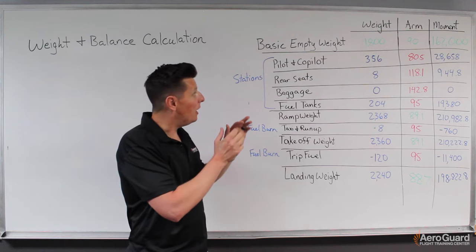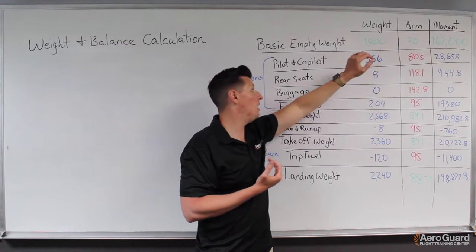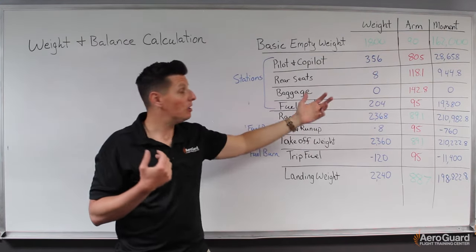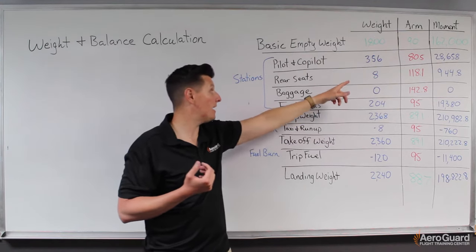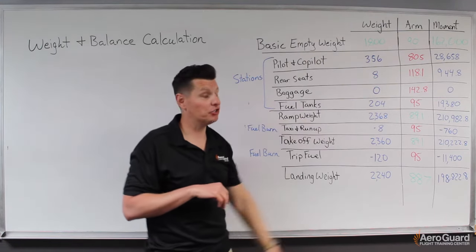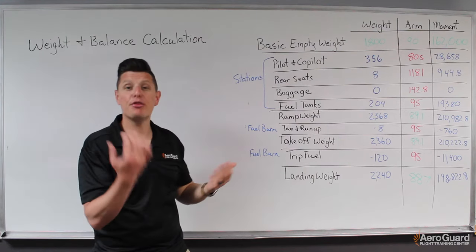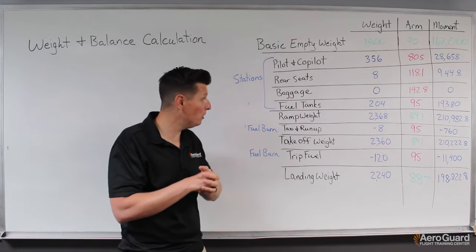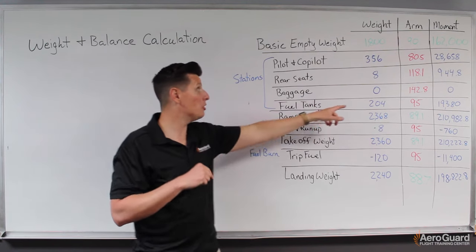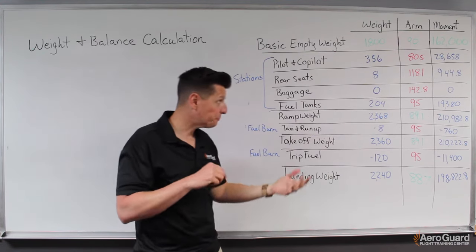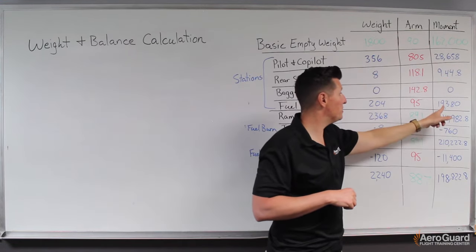In this example, I put in numbers for a particular flight. Two pilots went flying together, with a little bag in the back and nothing in the baggage compartment. They planned to fly for a while, so they had 34 gallons of usable fuel, which at six pounds per gallon is about 204 pounds of fuel. I've simply multiplied the weight times the arm to get these moments.